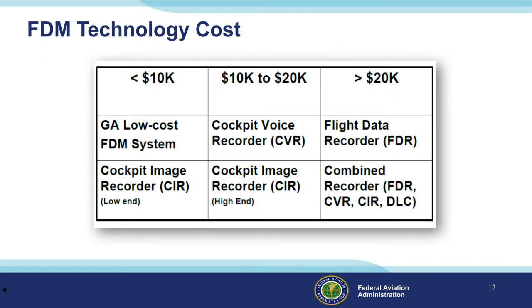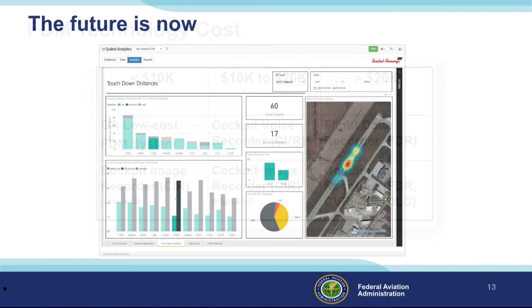At present, general aviation flight data monitoring technology ranges from a little less than $10,000 to more than $20,000, but as competition and equipage increases, prices are expected to fall. We're already seeing multi-sensor analysis programs on high-end GA aircraft.